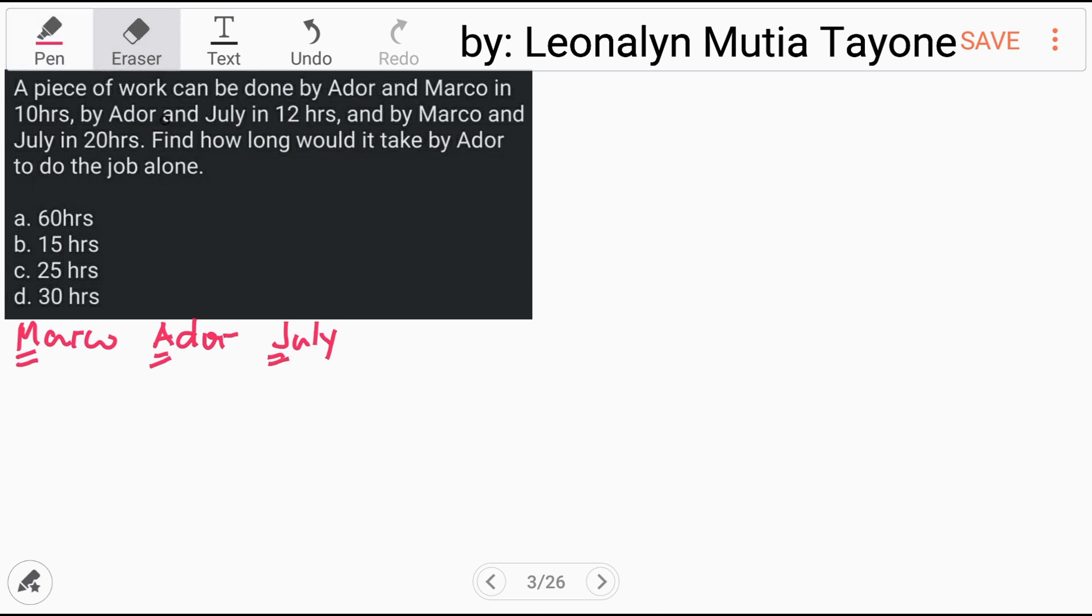Let's go back to the given. Adore and Marco in 10 hours. So, one job for Adore divided by A (the number of hours, which we don't know yet), plus one job for Marco divided by M (the number of hours Marco would work alone)—if they work together, one job will be completed in 10 hours.